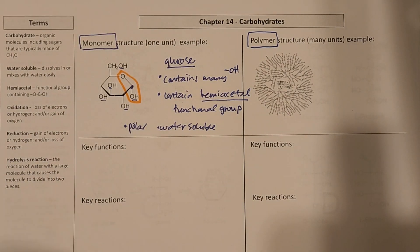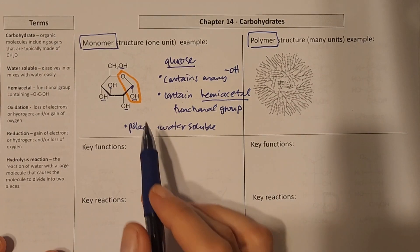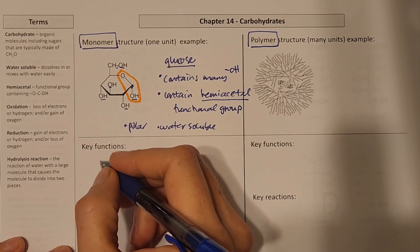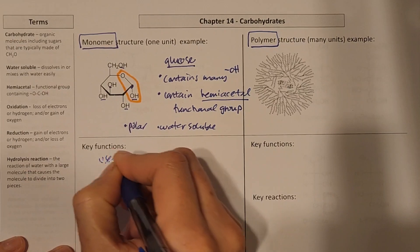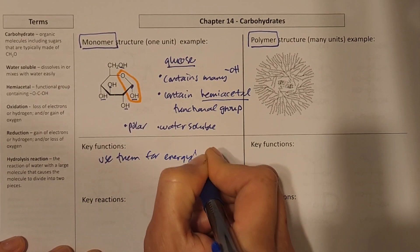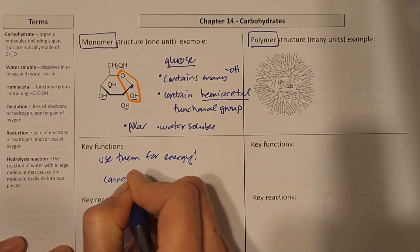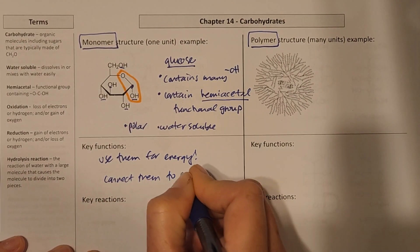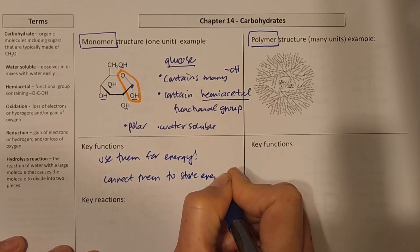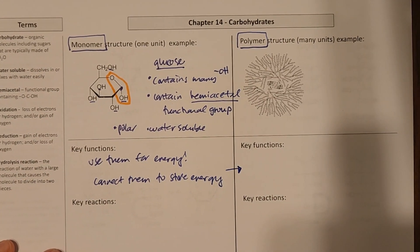So continuing on with some of these functions and reactions, the main thing that we're going to do with our monomers is use them for energy. So ATP, or we can connect them to store energy. And that would be what we do with our big polymers over here.